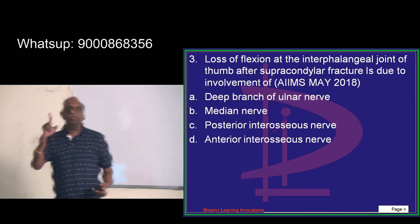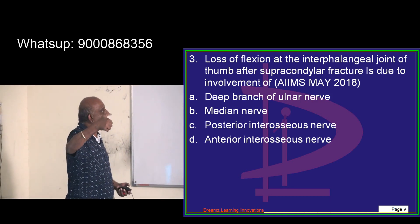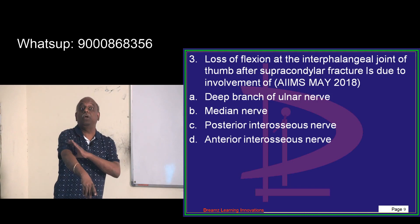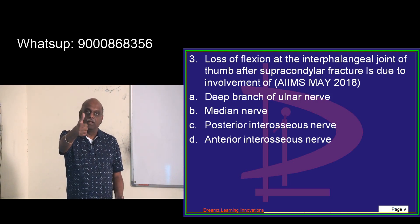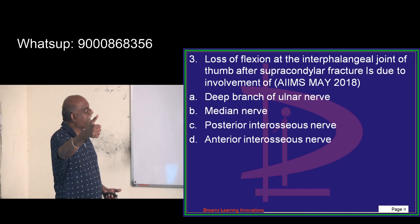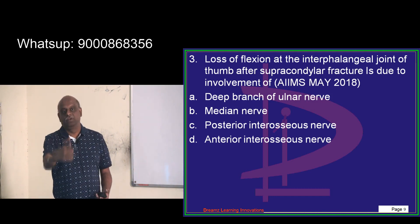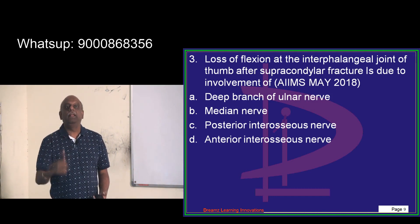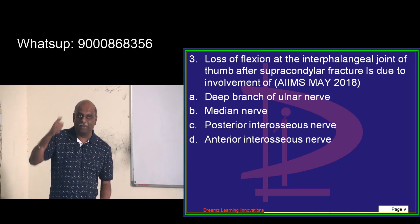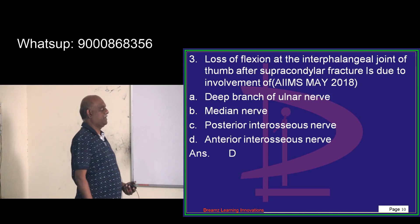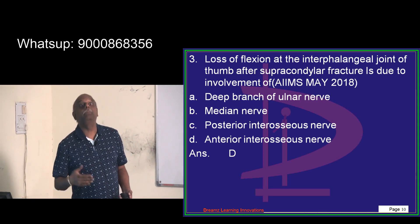There is a loss of flexion of the interphalangeal joint of the thumb when a patient has a supracondylar fracture. The flexor pollicis longus is supplied by a branch whose injury leads to loss of flexion of the interphalangeal joint of the thumb — a very important question. It is the anterior interosseous nerve, which is a branch of the median nerve.